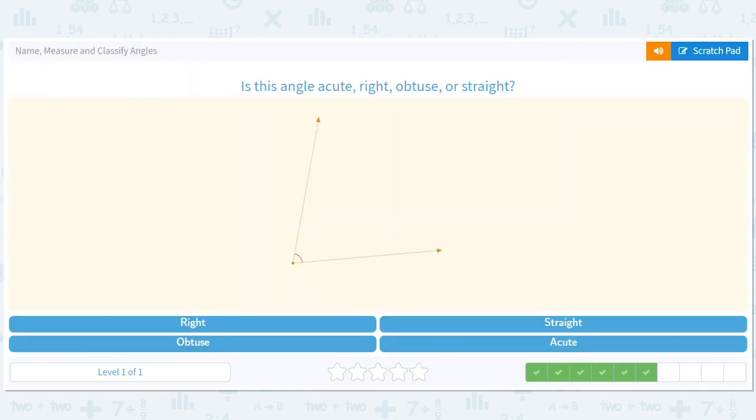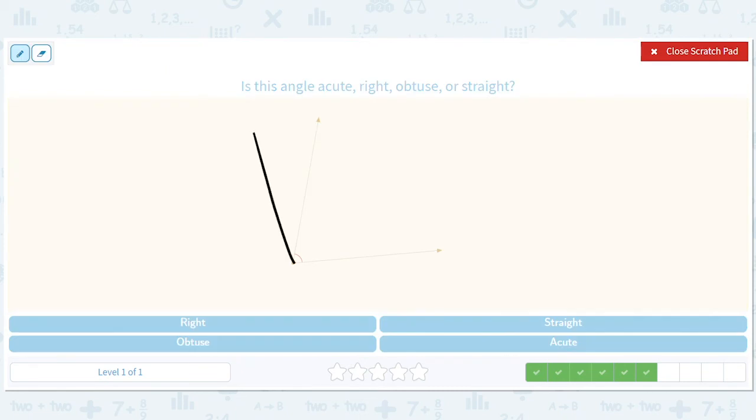Is this angle acute, right, obtuse, or straight? This would be right. This is a little bit smaller than that. So it's acute.